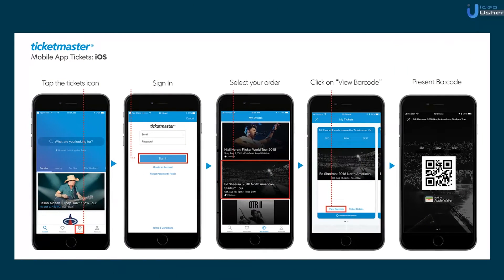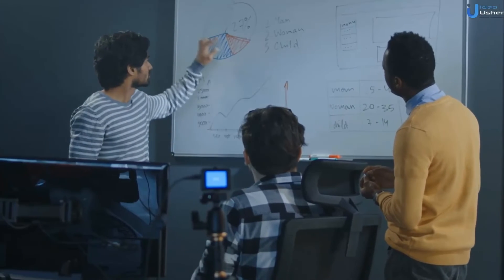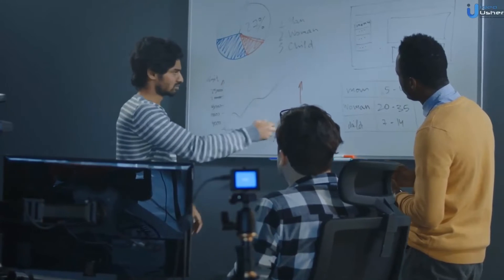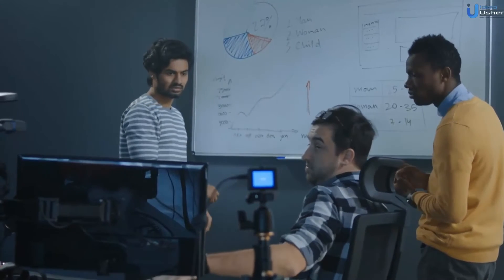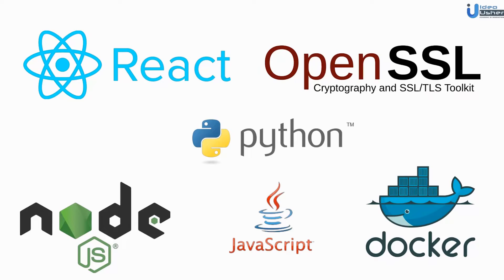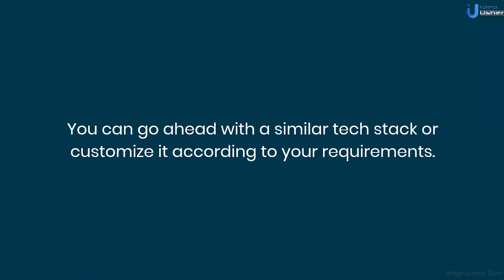As stated earlier, developing an app like Ticketmaster is a complex task requiring in-depth knowledge of development frameworks, design concepts, marketing strategies, etc. Thus, it becomes essential to hire an app development company that will provide experienced personnel, help in tech stack selection, and assist in marketing. The Ticketmaster app uses a comprehensive tech stack which includes JavaScript, Python, Node.js, React, OpenSSL, Docker, and many more tools. You can go ahead with a similar tech stack or customize it according to your requirements.